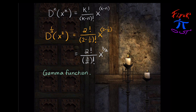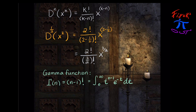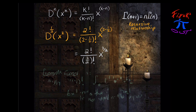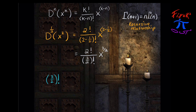Luckily, we have something that extends the factorial into other numbers, namely the gamma function. Gamma of n, which equals (n−1)-factorial, is given by the integral from zero to infinity of t to the (n−1) power times e to the negative t dt. This extends the factorial notation into numbers that are not whole-number inputs. There's also a recursive relationship that says gamma of (n+1) equals n times gamma of n, and we'll use that to help calculate some values.